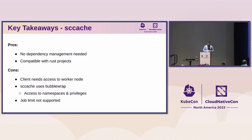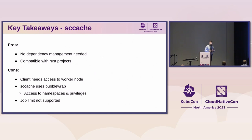But there are also some big cons. The client needs direct access to the worker node, because the scheduler will indicate which worker to use and the client submits the job directly to that worker, uploading all dependencies if they don't exist. Also, sccache uses bubblewrap — a thin wrapper that isolates the kernel from the job — which requires namespaces and thus a privileged pod. Additionally, job limits are not supported on the worker nodes, so if you submit lots of load, all these compilations run simultaneously, you run out of RAM, and the job is killed.